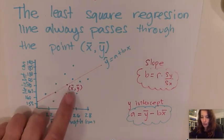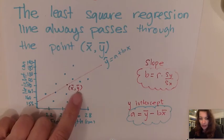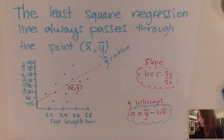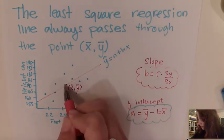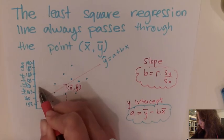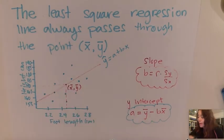somewhere along this line will always be the mean of x comma the mean of y. So the ordered pair, that means somewhere along here is the average of x and the average of y.